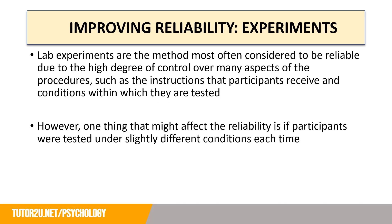How might we improve the reliability of an experiment? Lab experiments are the method most often considered to be reliable, due to the high degree of control over many aspects of the procedures — such as the instructions that participants receive and the conditions within which they are tested. However, one thing that might slightly affect reliability is if participants were tested under slightly different conditions each time, so we just need to be aware of this.